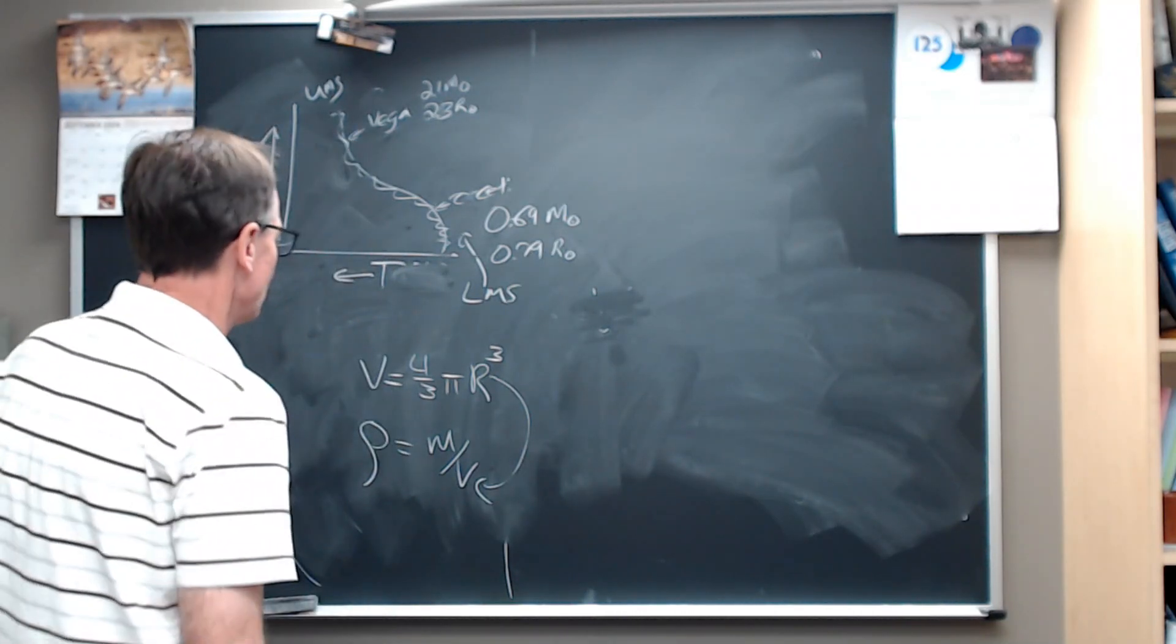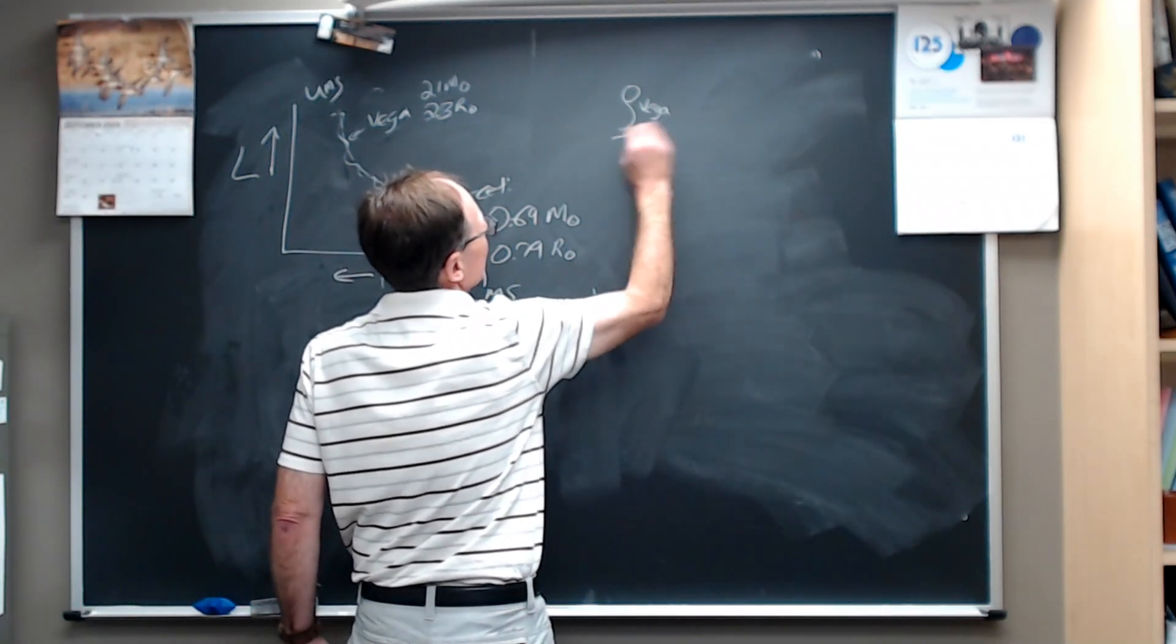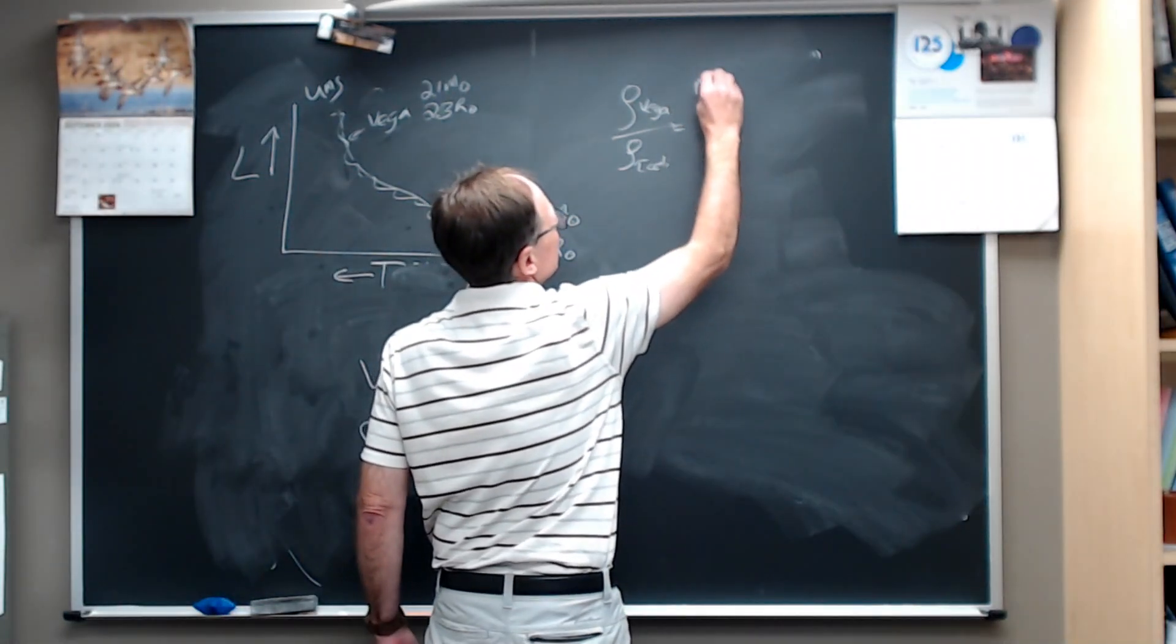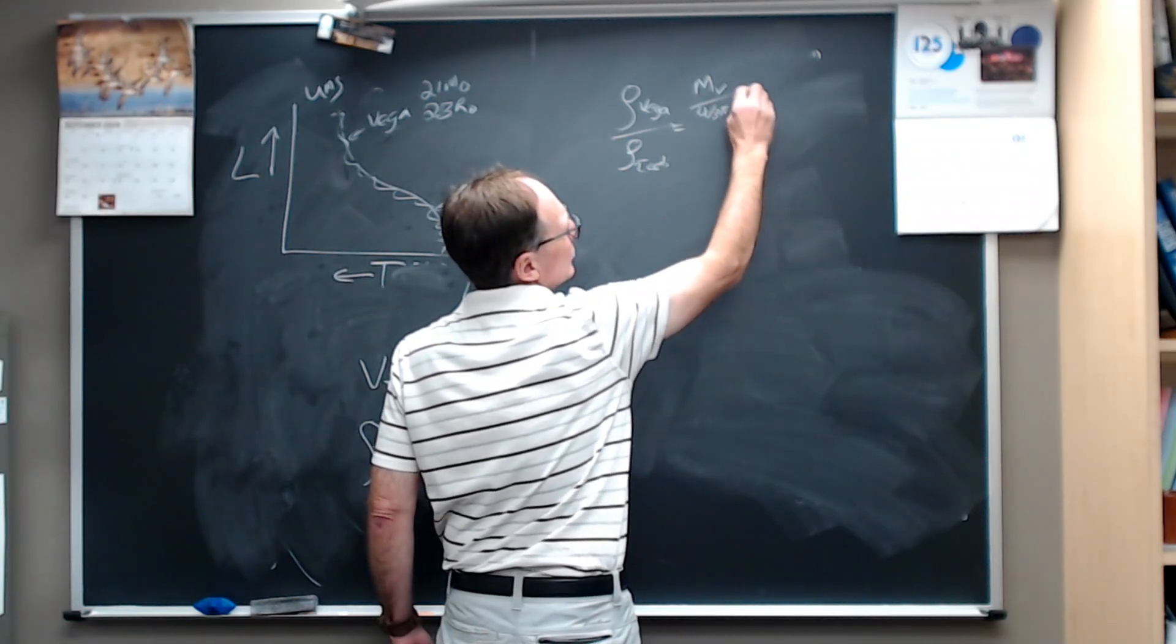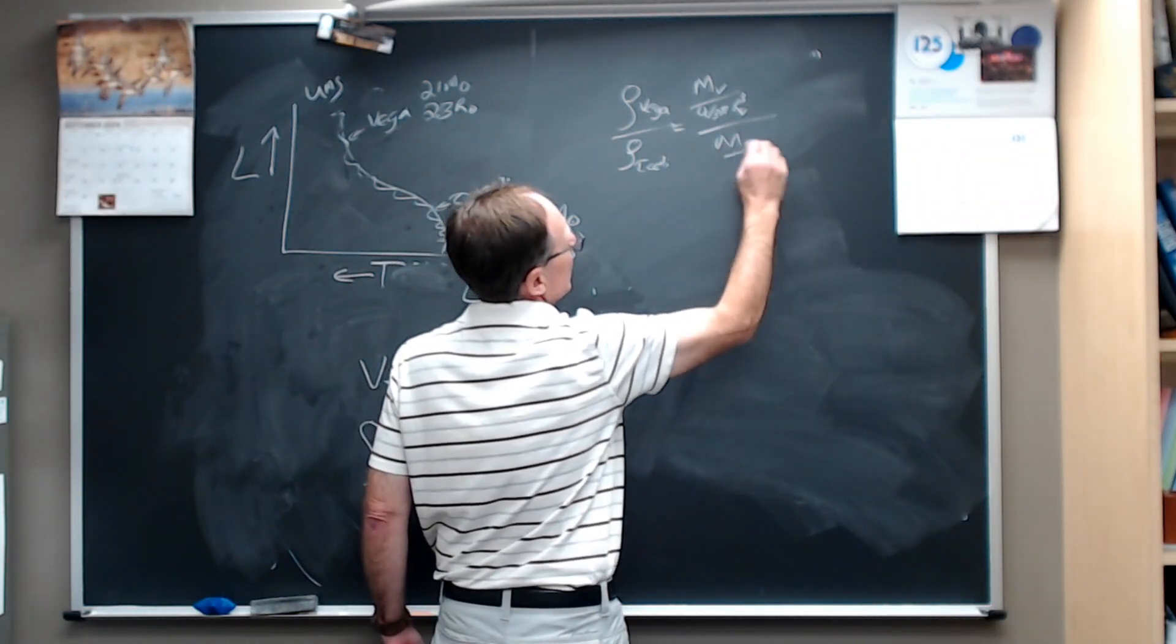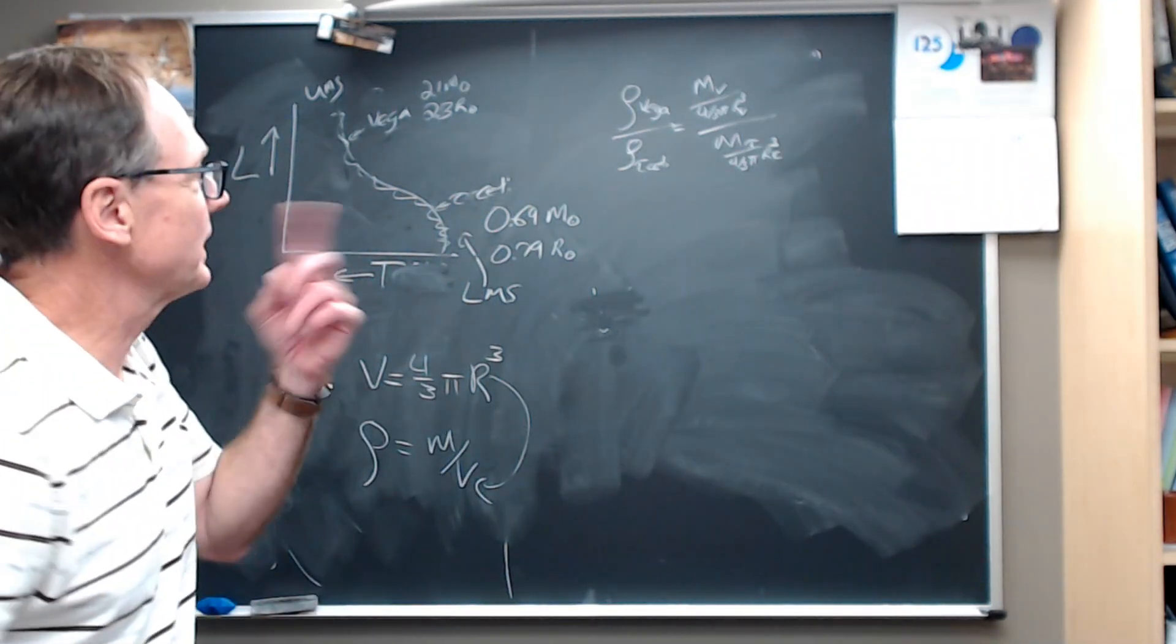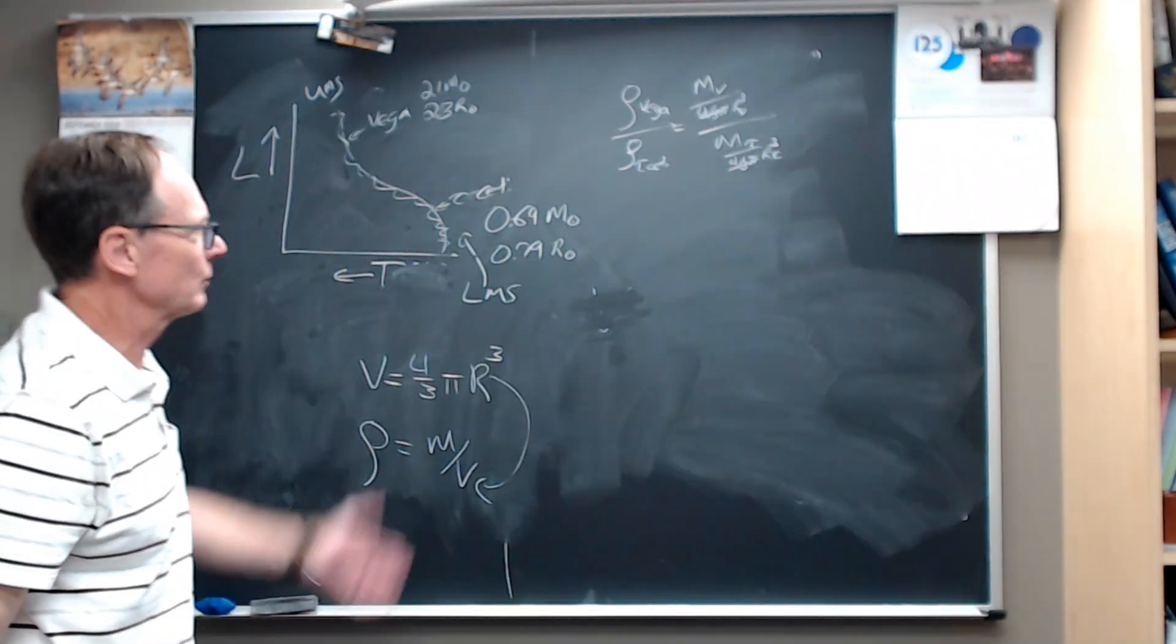So now we're going to say the density of Vega divided by the density of Tau Ceti is equal to the mass of Vega divided by four-thirds pi r of Vega cubed all over the mass of Tau Ceti divided by four-thirds pi r of Tau Ceti cubed. Now, what we're going to do, we're just going to get rid of the four-thirds pi, right? The four-thirds pi goes away top and bottom, and that's why we do these kinds of scaling things.